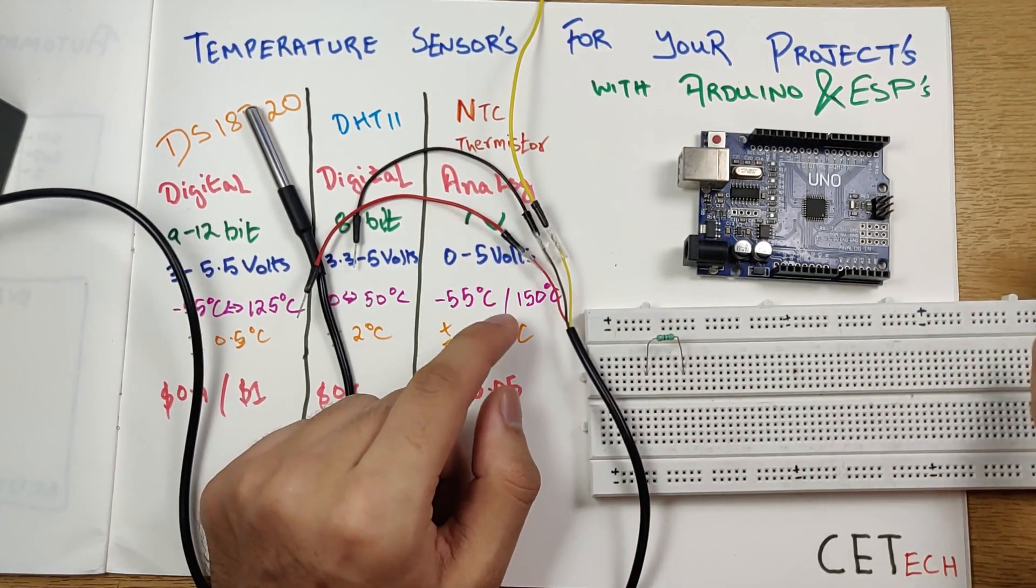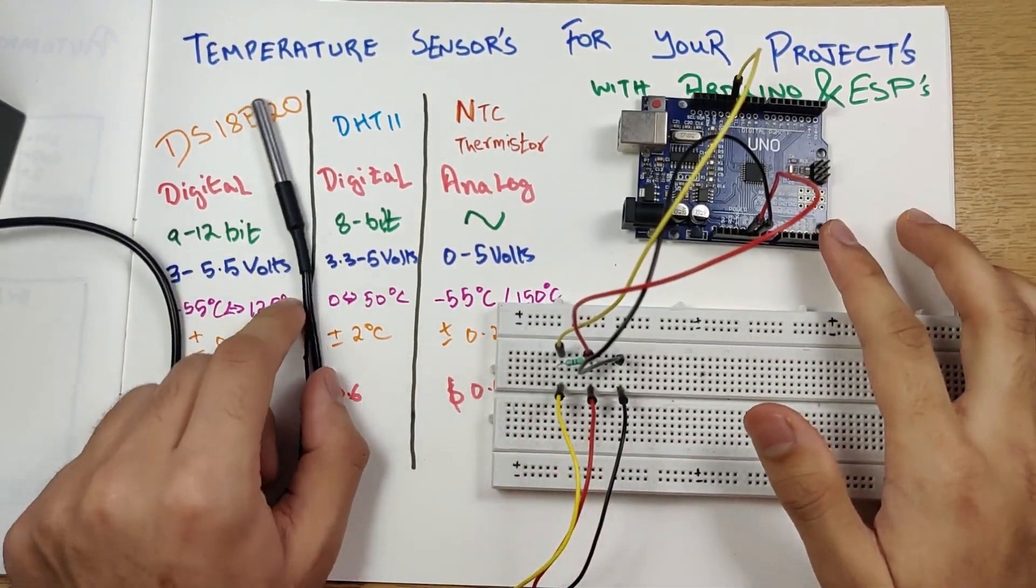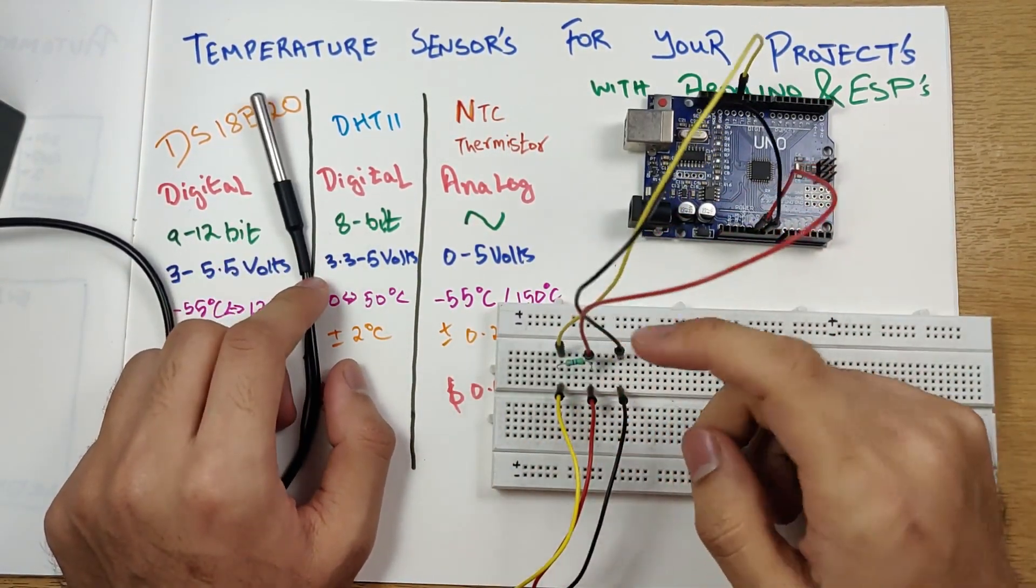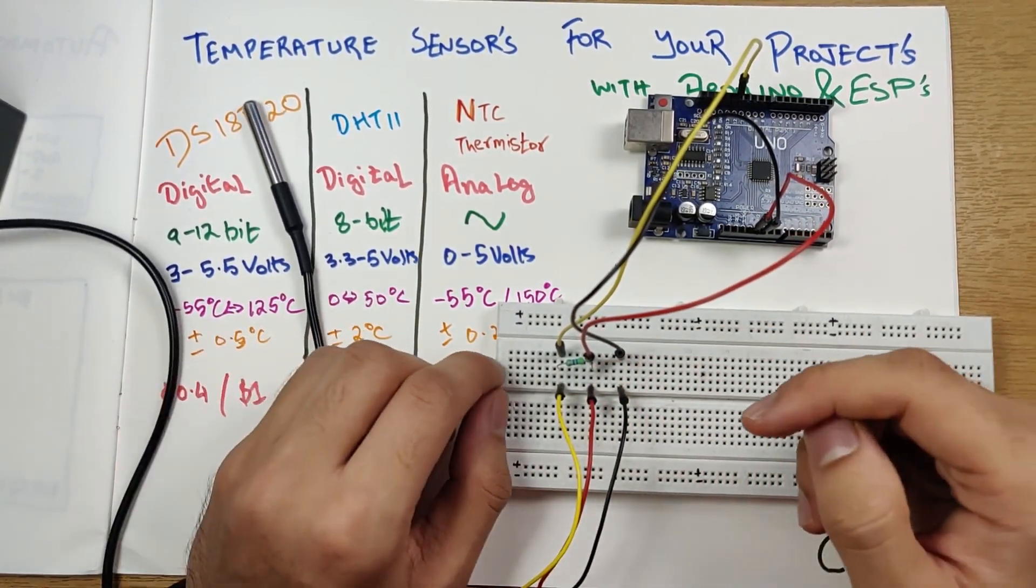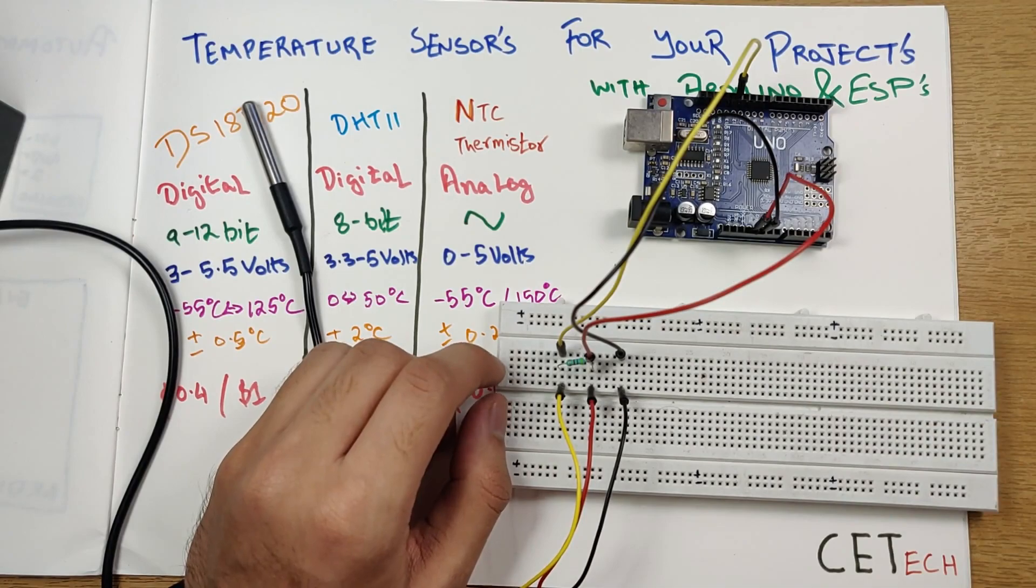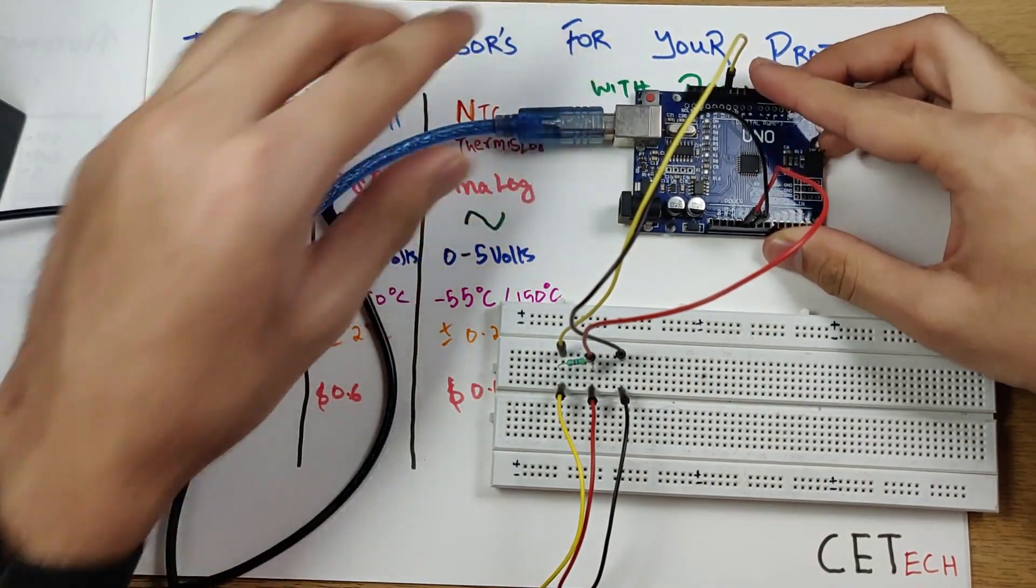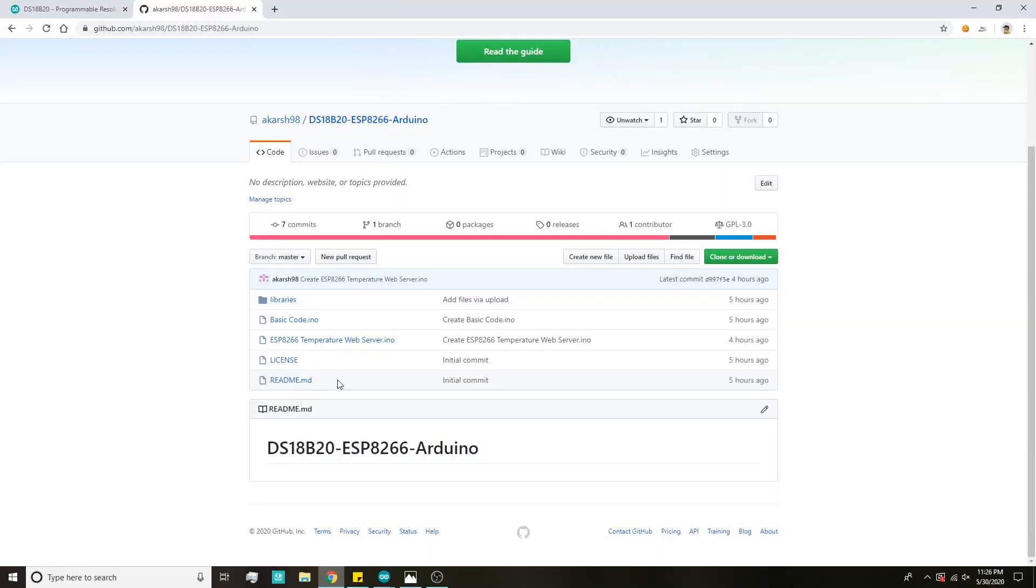So I've connected the Arduino to the DS18B20 according to the circuit diagram. It's pretty simple. And now we can go ahead and connect the Arduino to your laptop and start the coding part. So let's move on to the laptop.